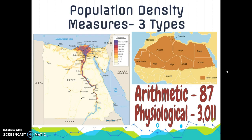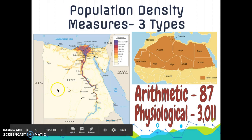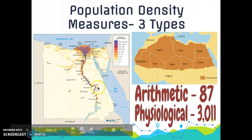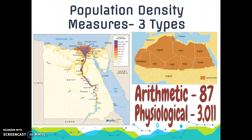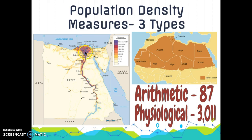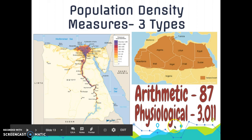Egypt's arithmetic population density is 87, yet its physiological density is much higher at 3,011. This is because the majority of Egypt's land is the Sahara Desert, which is not arable. About 95% of Egyptians live in the Nile River Valley Delta, where the land is most fertile. This area represents only 3% of Egypt's total land area, which explains the very high physiological density.